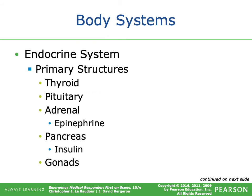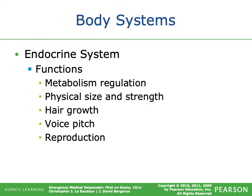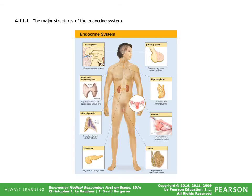The endocrine system includes your thyroid, pituitary, and adrenal glands, as well as the gonads in both male and female. The adrenal glands excrete epinephrine, which is part of your fight-or-flight response. The pancreas secretes insulin. Functions of the endocrine system include metabolism and regulation, physical size and strength, hair growth, voice pitch, and reproduction.